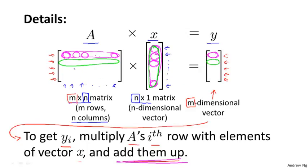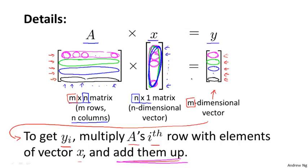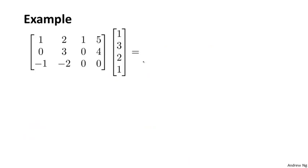We then take the third row of A, multiply element-wise with vector x, sum the results, and get the third element, and so on until we get to the last row. Let's do one more example. This is a 3 by 4 dimensional matrix and a 4-dimensional vector, or 4 by 1 matrix. The result of this product is going to be a 3-dimensional vector.